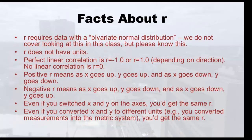I want to wrap up with a few facts about r. First, r requires data with a bivariate normal distribution — something we didn't check before doing our r in this class, but please know that if you take another statistics class and they bring up r, they might talk about checking for bivariate normal distribution. Also, r does not have any units — just like the coefficient of variation had no units, r is one of those things that doesn't have units.